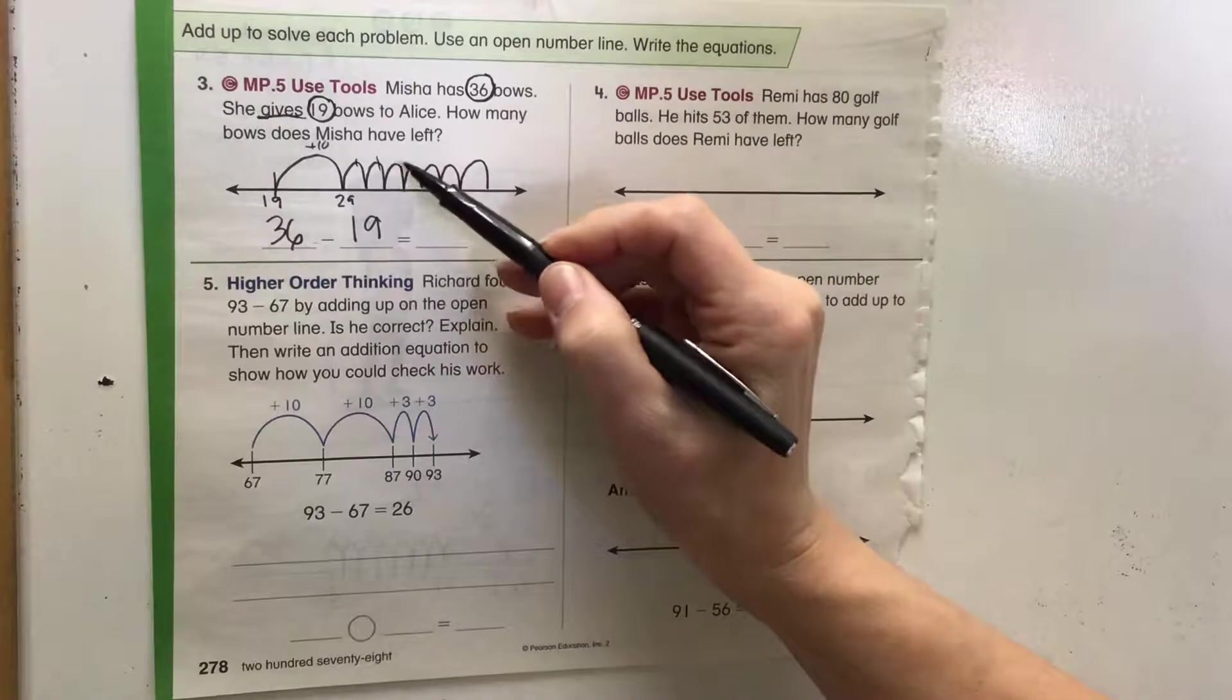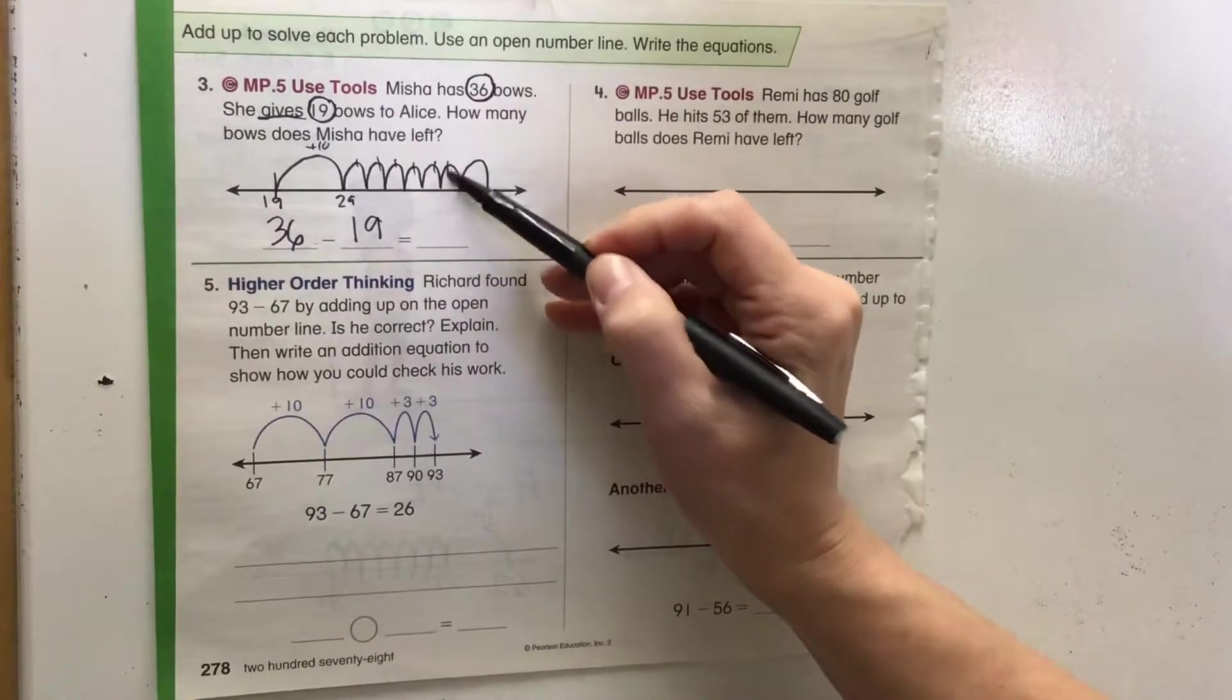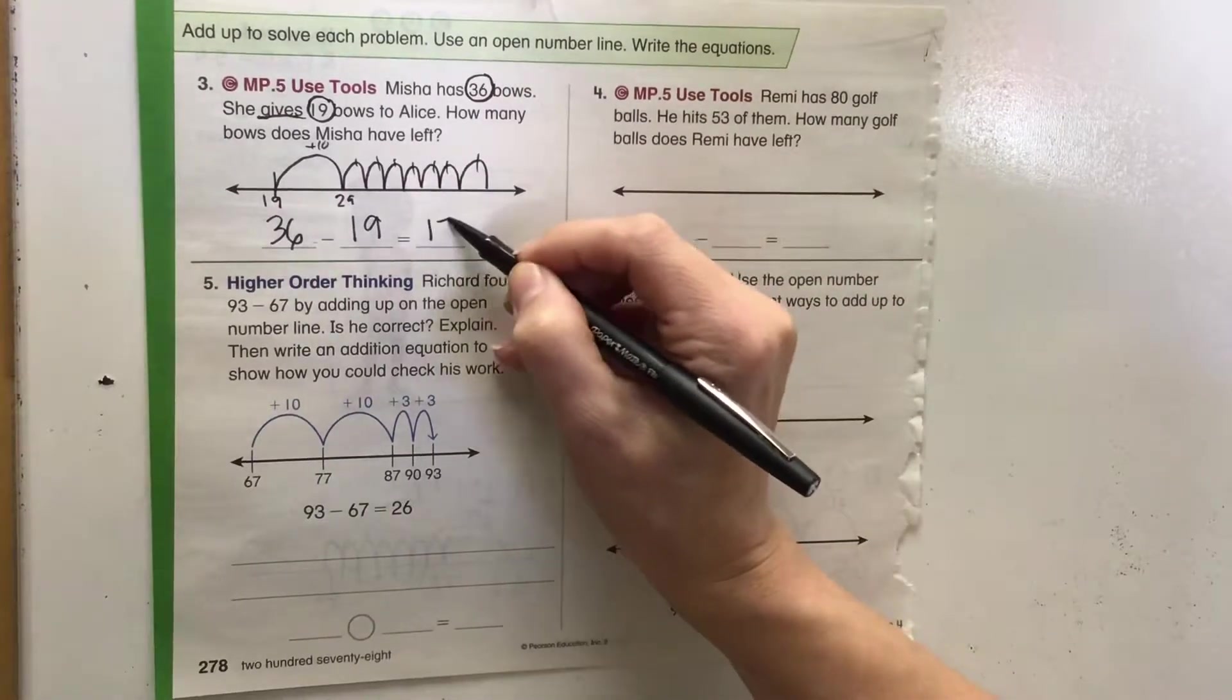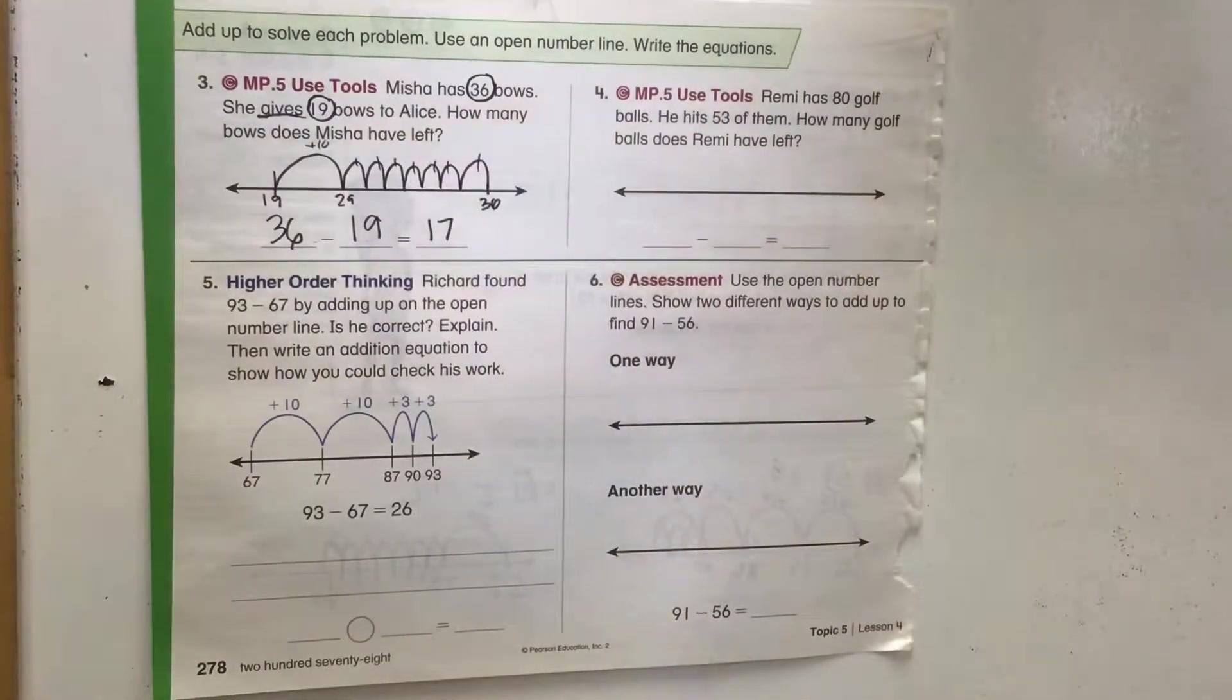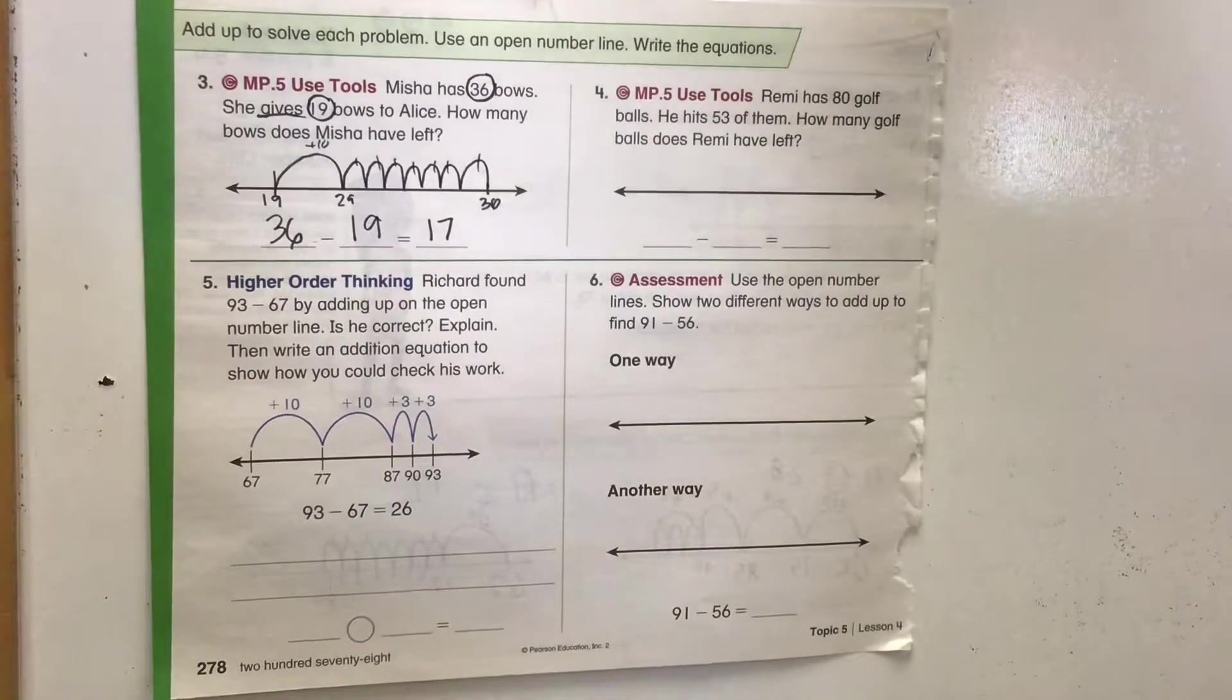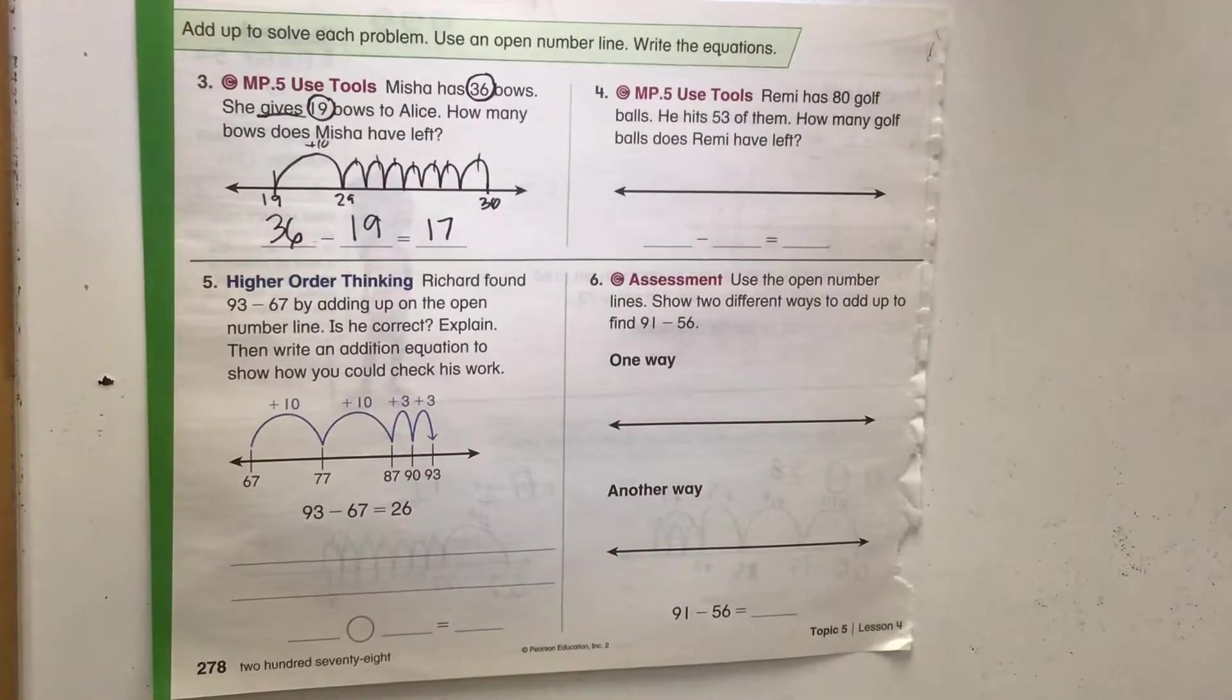So we have 10, 11, 12, 13, 14, 15, 16, 17. Students can also start here at 36 and go backwards. Either way is just fine, but since this unit's kind of working on counting up, we'll stay with that one.